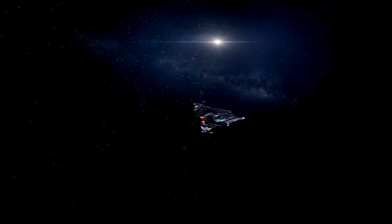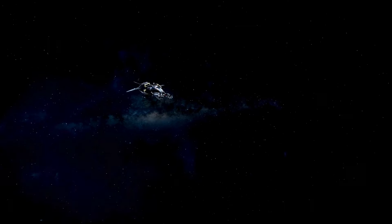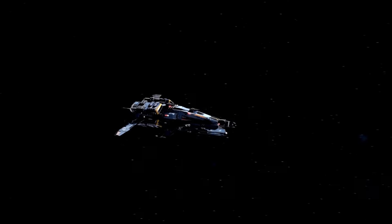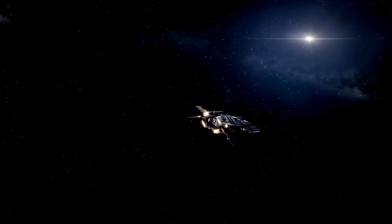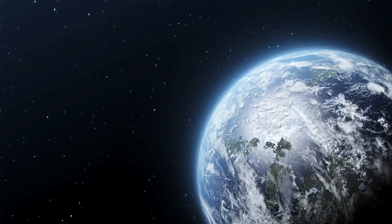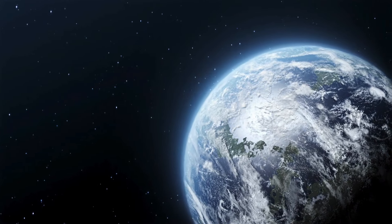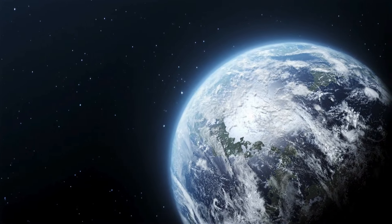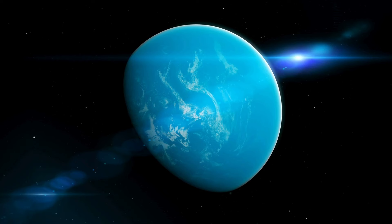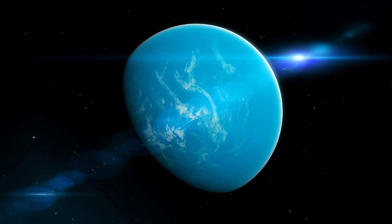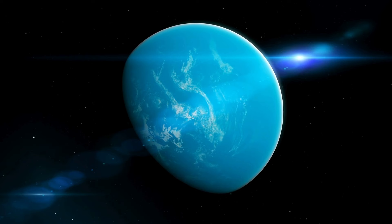Proxima Centauri b receives roughly the same amount of energy from its star as Earth does from the sun. Could this mean there's water on its surface, maybe even life? As we adventure beyond our solar system, we find a completely different universe of exoplanets, planets that circle stars other than the sun.